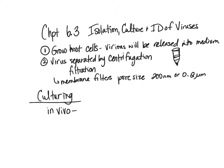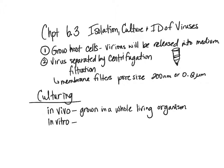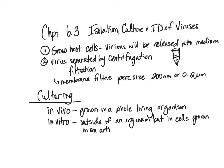In vivo is when something is grown in a whole living organism — like inside of a person or inside of an embryo. And then there is in vitro, which is outside of an organism but in cells grown in an artificial environment. You might have heard these terms when reading studies or scientific papers.